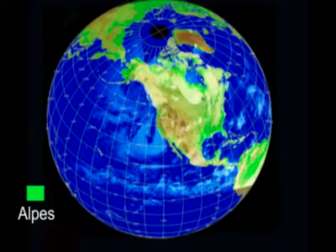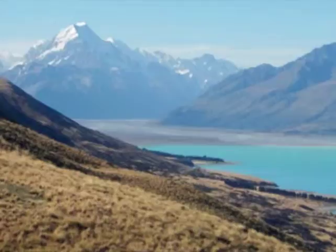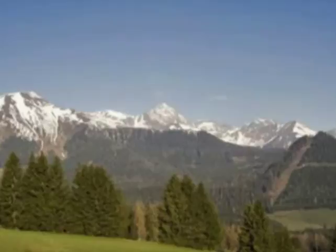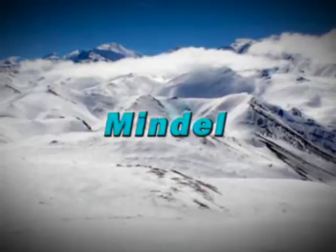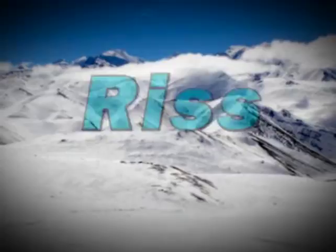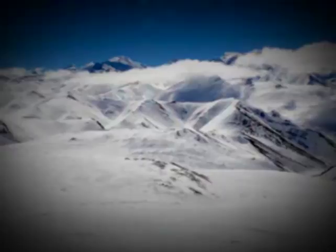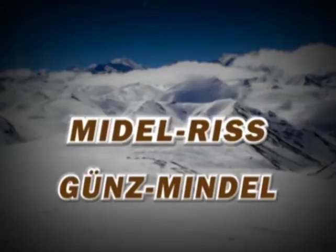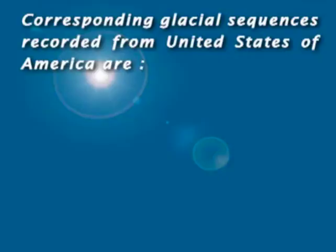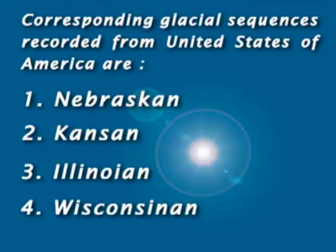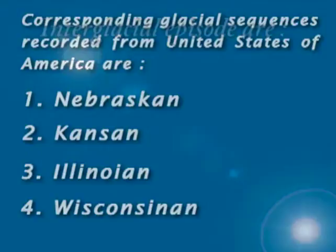Thus, four glacial sequences have been recorded. These are the Günz, Mindel, Riss, and Würm, intervened by three interglacials, namely Günz-Mindel, Mindel-Riss, and Riss-Würm. The corresponding glacial sequences recorded from the United States are Nebraskan, Kansan, Illinoian, and Wisconsinan, while the interglacial episodes are Aftonian, Yarmouth, and Sangamonian.